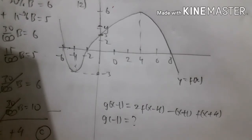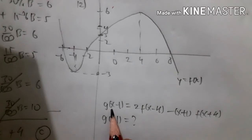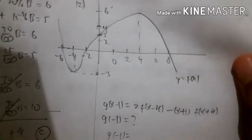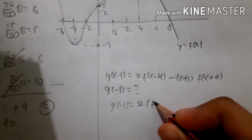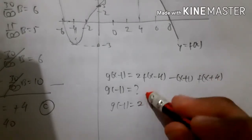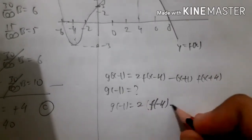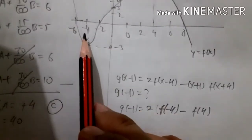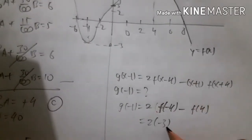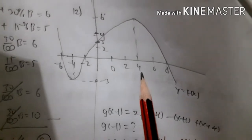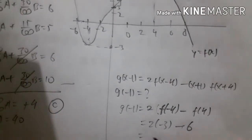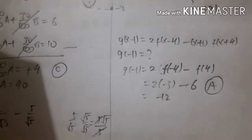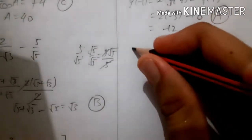To get g(minus 1) we need x equals 0, so g(minus 1) equals 2·f(minus 4) minus f(minus 1) times f(4). From the graph, f(minus 4) is minus 3, so 2 times minus 3 is minus 6, and f(4) is 6, giving minus 12. The answer is A.